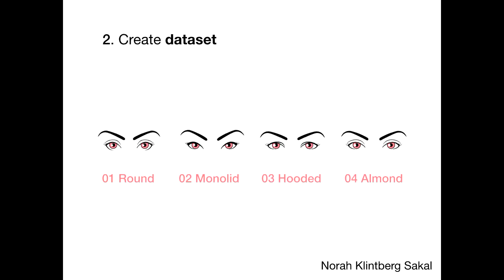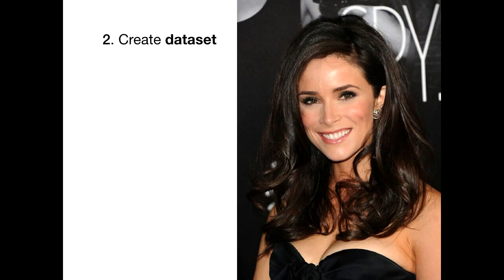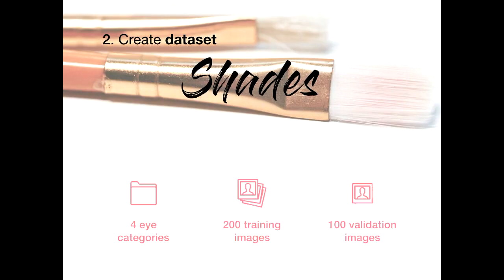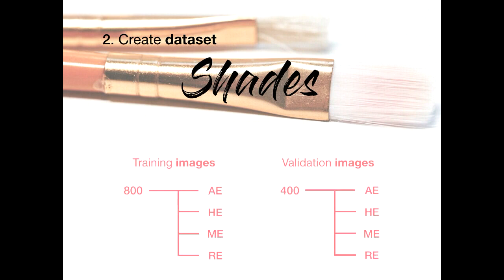There are a lot of varieties, but these are the four distinct ones. To create the dataset, I used an open dataset with hundreds of images of celebrities. I manually cropped out the eye region and divided it into four categories: almond, hooded, monolid, and round eyes. It's a fairly small dataset — I cropped 200 images for training for each of the categories, and then 100 more for validation.